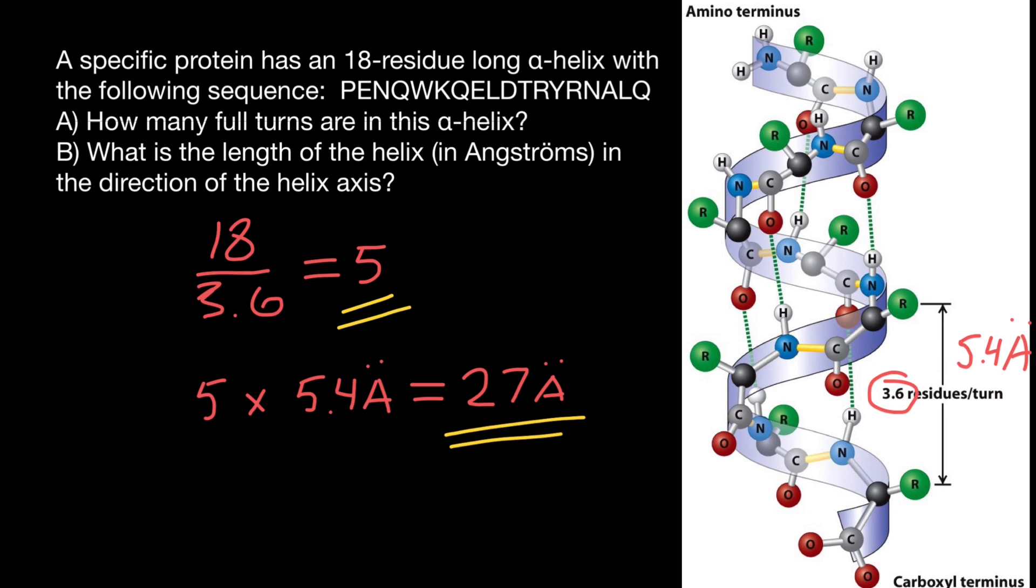So in order to answer this type of questions, you just have to memorize these two numbers: 3.6 residues or amino acids per one turn in an alpha helix, and 5.4 angstroms is the distance between backbone in one turn.